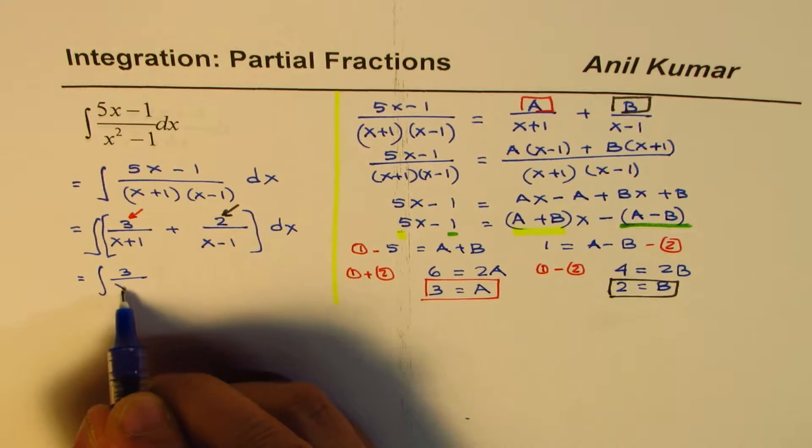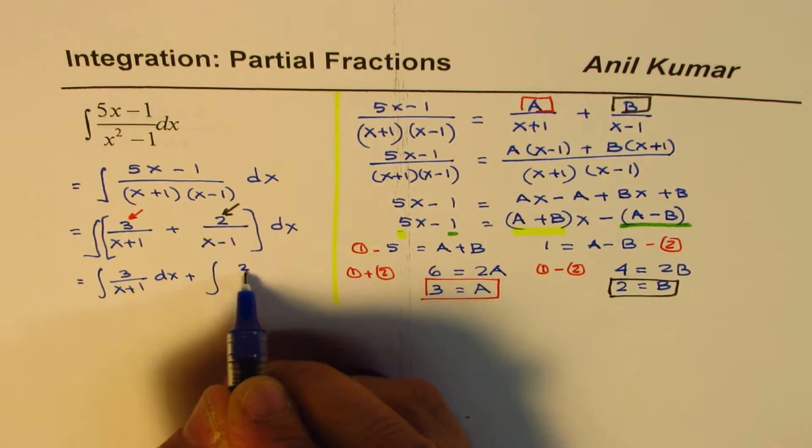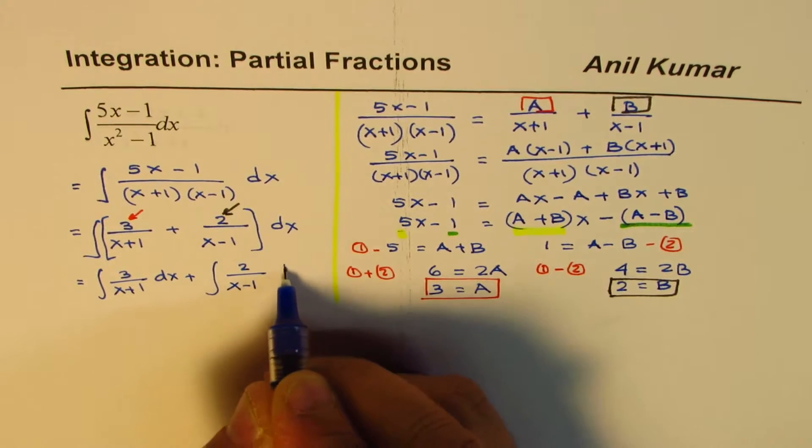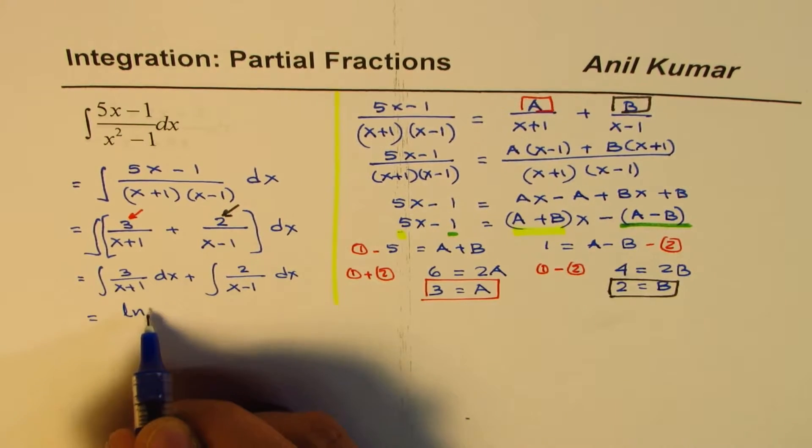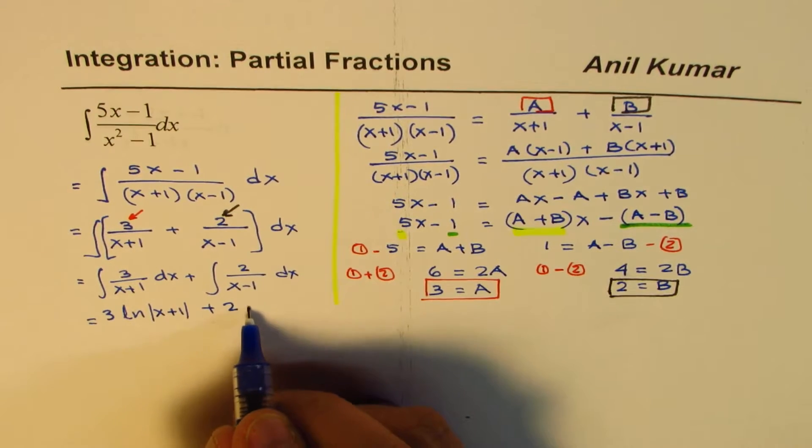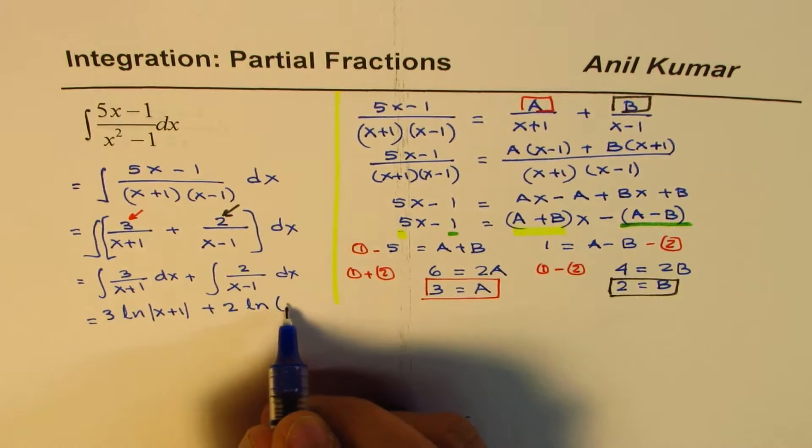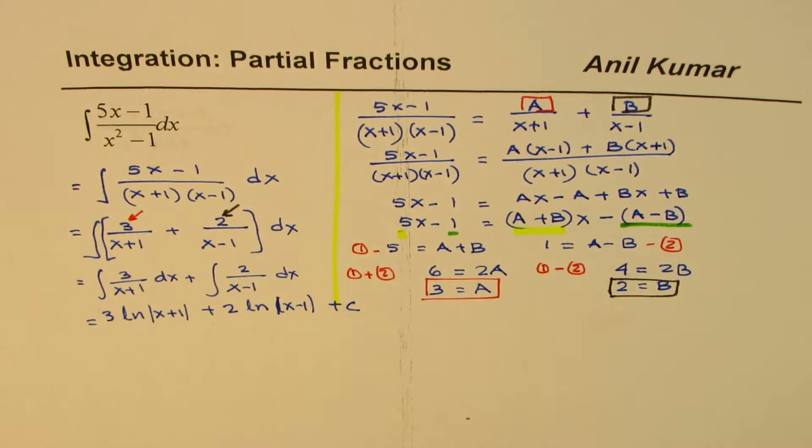So let me rewrite this. We have 3 over x plus 1 dx plus integral of 2 over x minus 1 dx. And what is the integral of this? It is ln absolute value of x plus 1 times 3. And this one is 2 times ln absolute value of x minus 1. And then a constant, c.